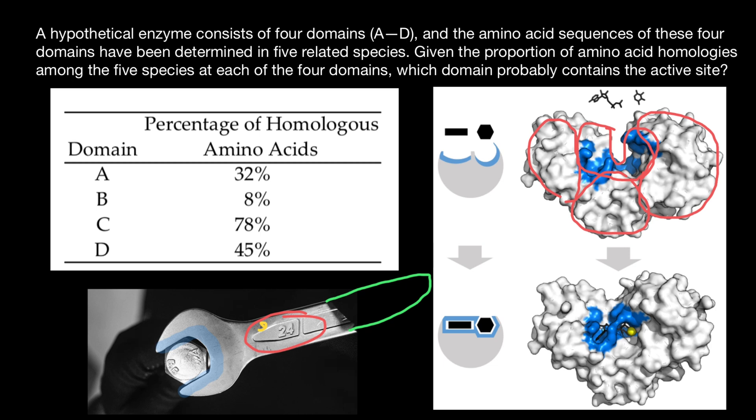So when scientists compare multiple species, in our case five species, and they take the same enzyme, same protein, of course it's not going to be exactly the same, but it will have higher homology.